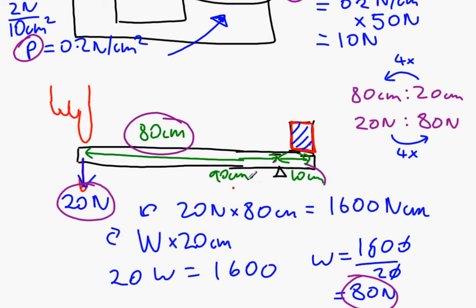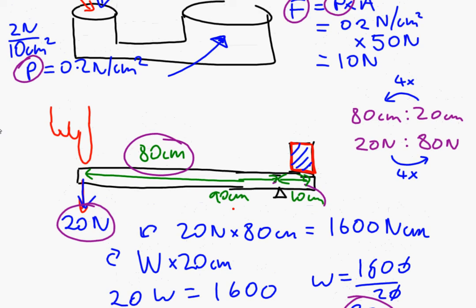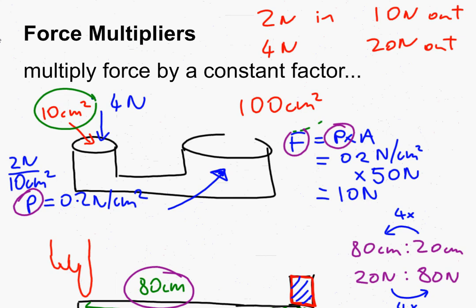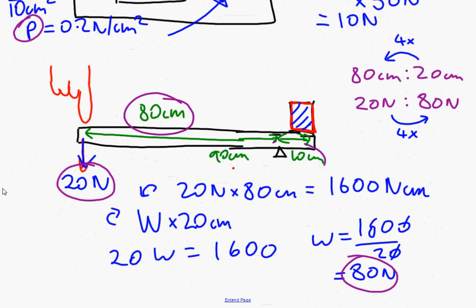Now my ratio is going to be 10 to 90, which is 1 to 9. So I'm nine times further away from the pivot, therefore my force is going to be multiplied by a factor of nine. So my force multiplication has changed. So the reason they're called force multipliers is that for a given setup, for a given pair of piston sizes or for a given pair of distances from a pivot, the machine multiplies the force by a set amount.